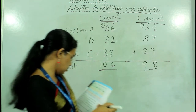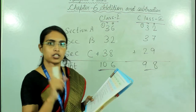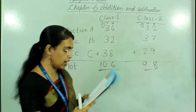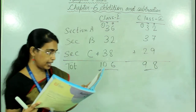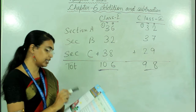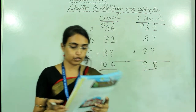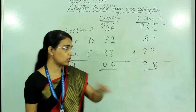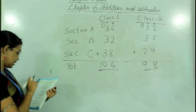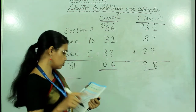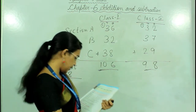We have to add all the numbers to find out the total number of students in class 2. Adding the ones place: 9 plus 7 plus 2 gives 18, write 8 carry 1. Then 2 plus 3 plus 3 is 9, plus carry 1 is 10, but wait — altogether in class 2 they have 98 students. Class 1 has 106 students.